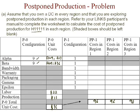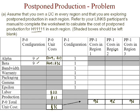Now we come to the region-by-region calculations for postponed production. We add the cost associated with bandwidth, warranty, packaging, gamma, and epsilon at the DC, since the semi-finished product is shipped from the plant to each regional DC. For a co-located DC it stays in region 1, but for region 2 and region 3 they are in completely different geographies.